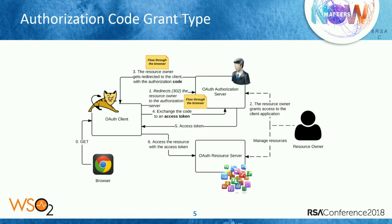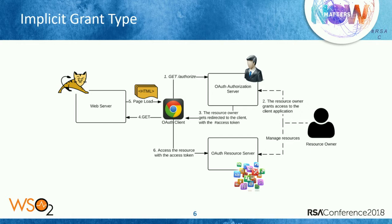The implicit grant type is mostly obsolete. Earlier some people used this for single page applications, but now this is not a recommended approach. The recommended approach is still to use the authorization code grant type with no client credentials. In the implicit grant type, the first two phases are combined — you redirect the user to the authorization server, there is no intermediate code, you get the access token directly, and then use that access token to access the resource.